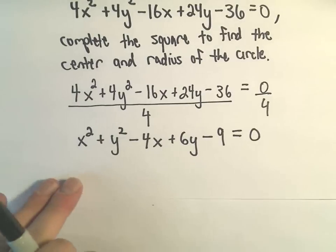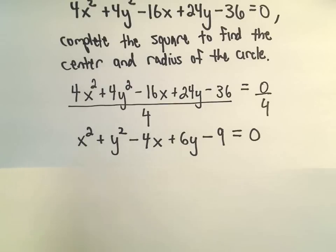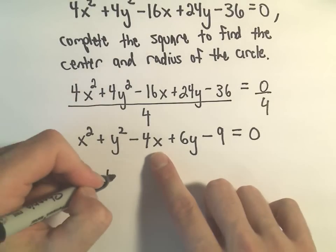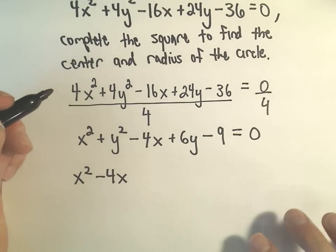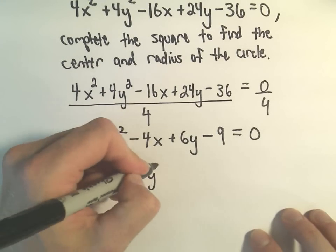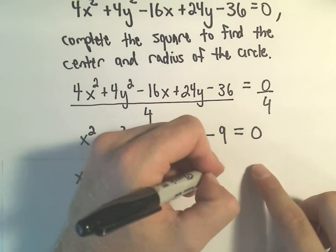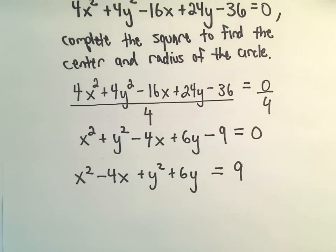What I'm going to do next is I'm going to kind of regroup things here a little bit. I'm going to put the x's next to each other, and I'm going to put the y's next to each other. So notice we have an x squared, we've got negative 4x, and then we've got positive y squared hanging out. We've got a positive 6y. And the other thing I'm going to do is I'm going to add the 9 over to the right side.